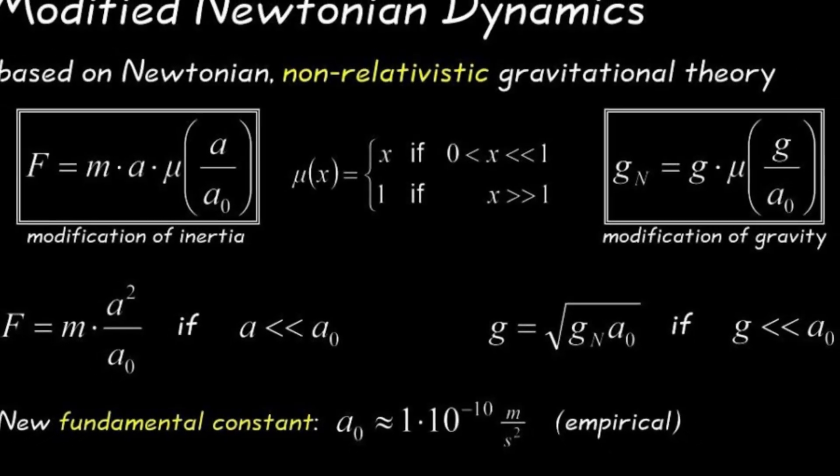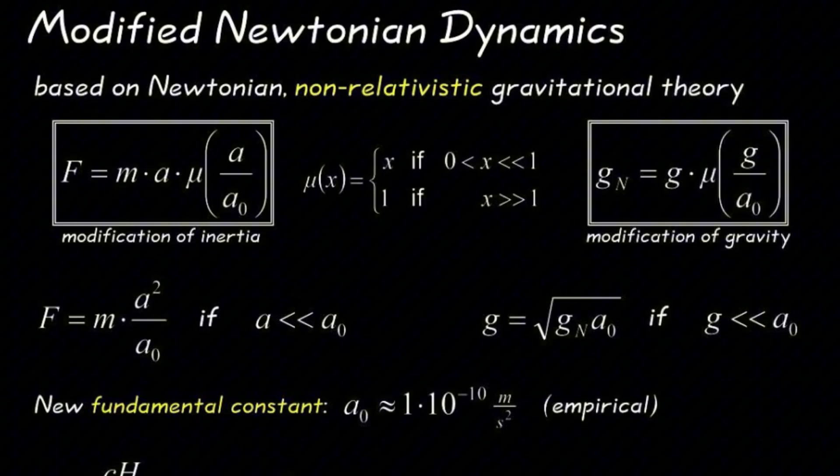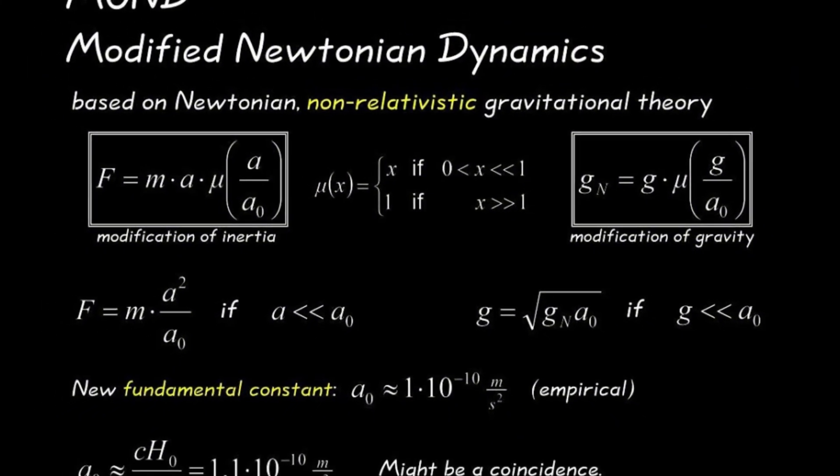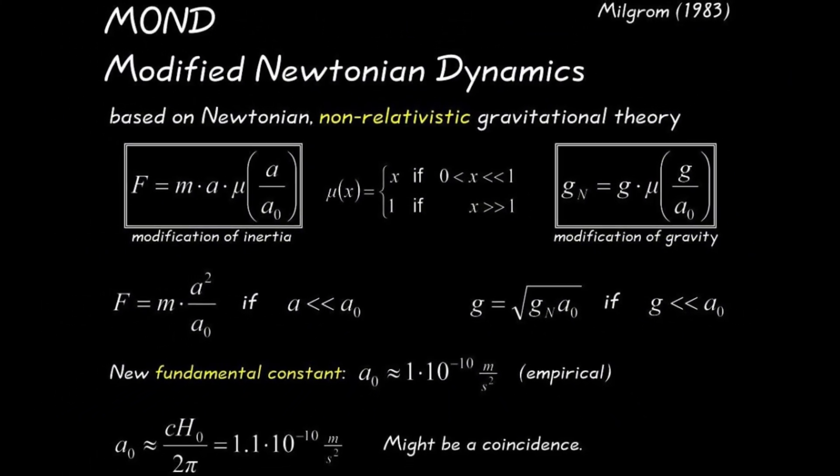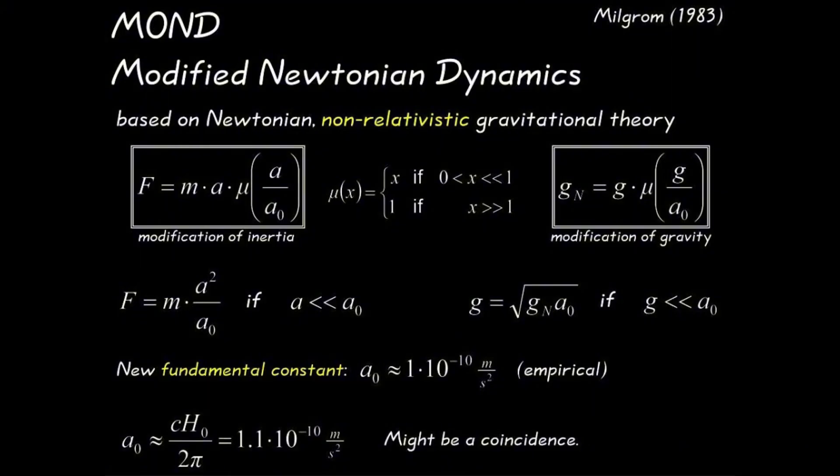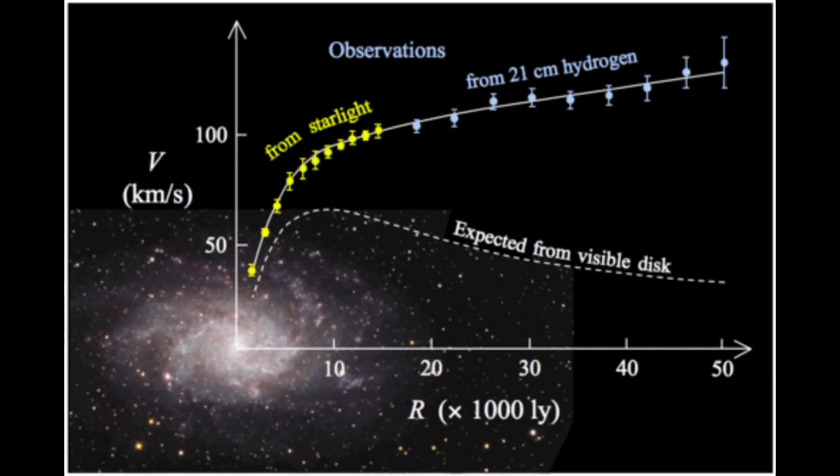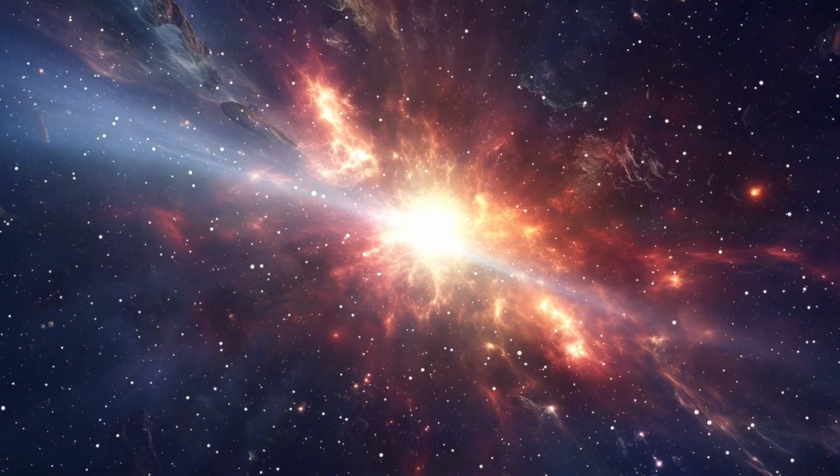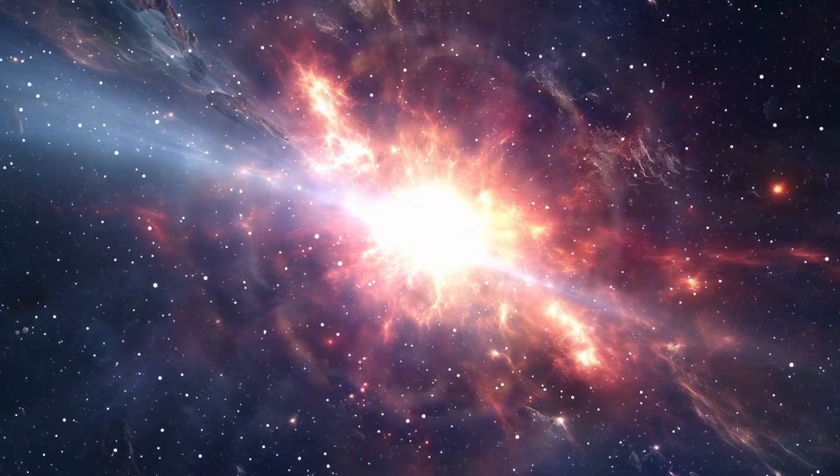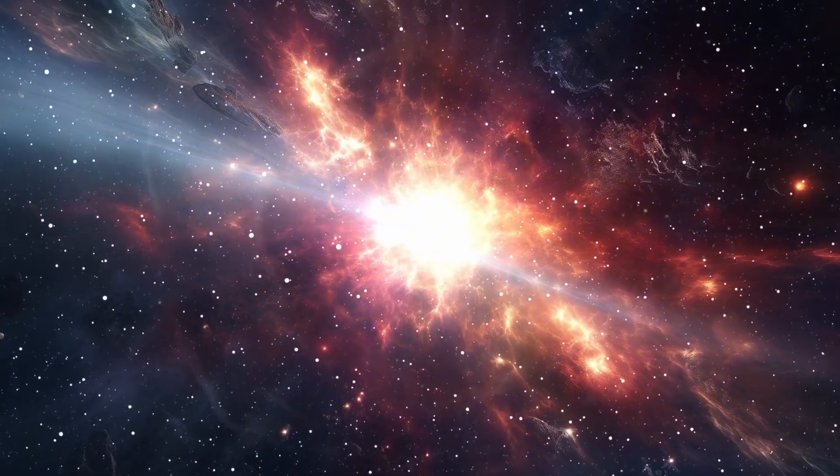Modified Newtonian Dynamics, or MOND, once a fringe theory, has gained renewed attention as researchers look for ways to reconcile these astronomical anomalies. While MOND was originally designed to explain galaxy rotation curves without invoking dark matter, some versions attempt to explain large-scale cosmic behavior as well. These theories remain controversial but highlight the extent to which scientists are exploring every possible avenue.